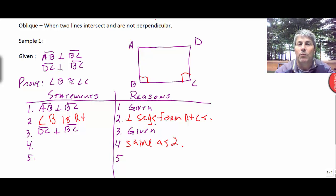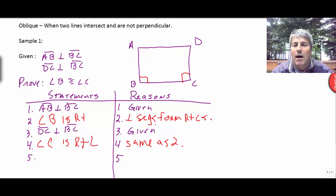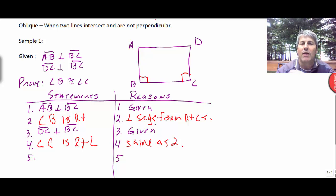Now we want to prove angle B is congruent to angle C. Better put my reason in. Now I have two right angles. So then I can finish my proof that angle B is congruent to angle C. And I can use my reason,